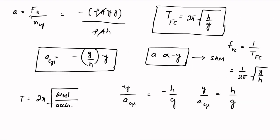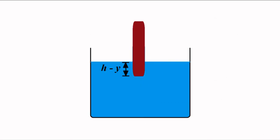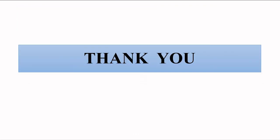To find the acceleration of the block, we divide the restoring force (minus rho A y g) by the mass of the cylinder (rho A h). The rho A terms cancel, giving acceleration equals minus g y over h. From the displacement-to-acceleration ratio we get the time period T equals 2 pi root of h over g. This oscillatory motion continues — equilibrium, pushed downward, restoring force pushes it upward, and so on. This is the floating cylinder example of simple harmonic motion. Please subscribe to Engineering Tutorial for more such videos.